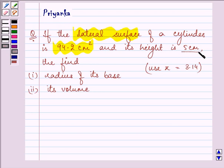its height is 5 cm, then find the radius of its base and its volume. We are also given to use the value of π as 3.14.